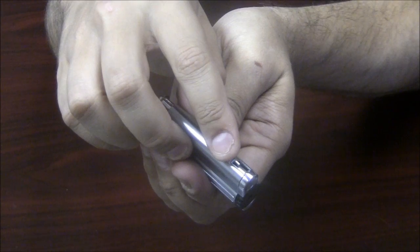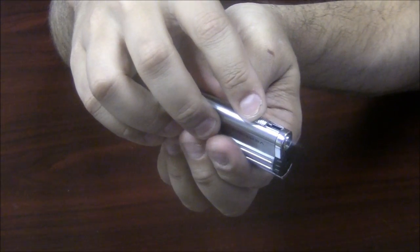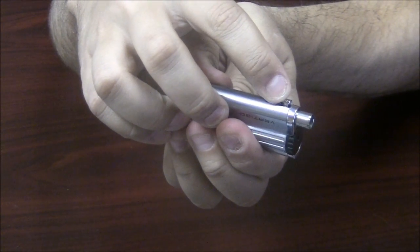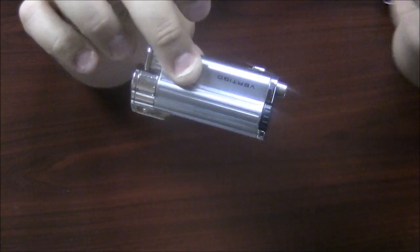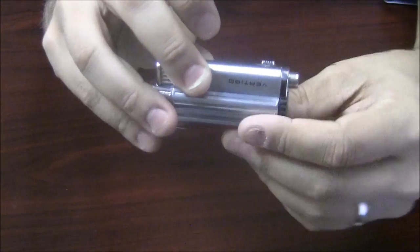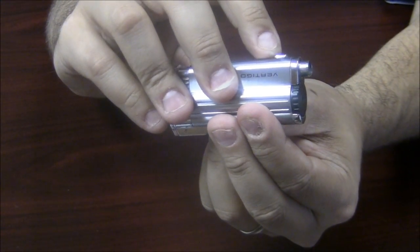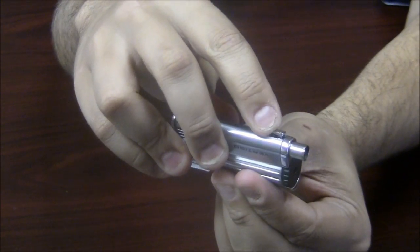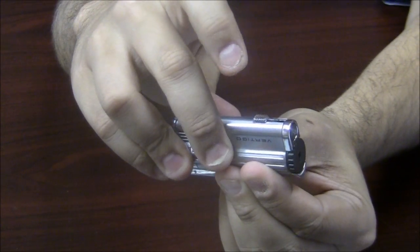On the side of the lighter you will see this little switch. You push that, a punch cutter comes out, and you slide that to lock it into place so you can punch your cigars. When you are done, push it forward, slide it backwards, and it retracts.